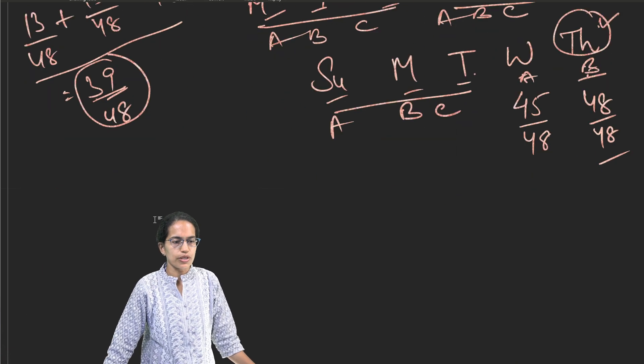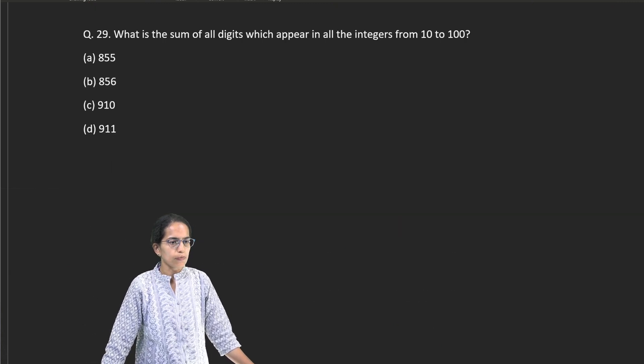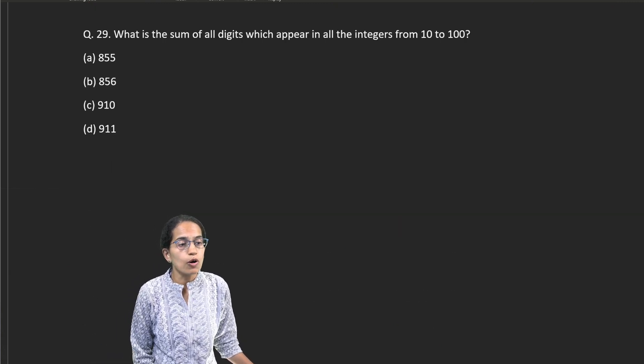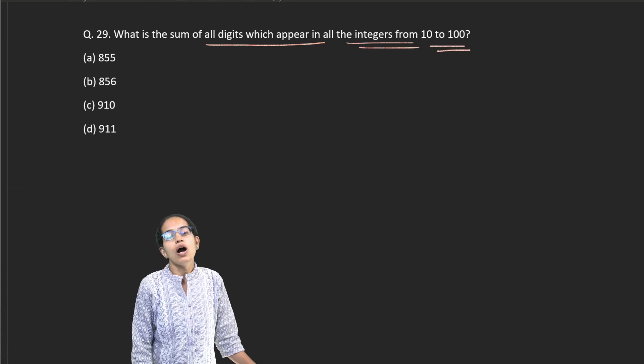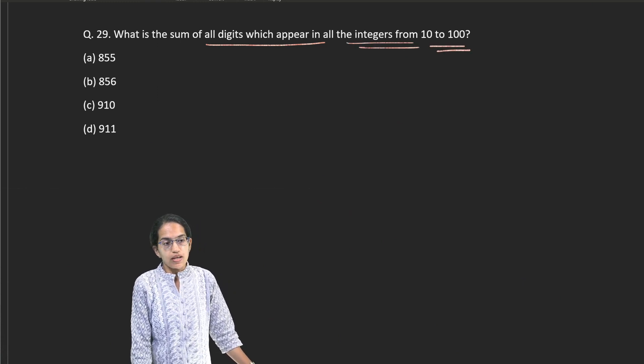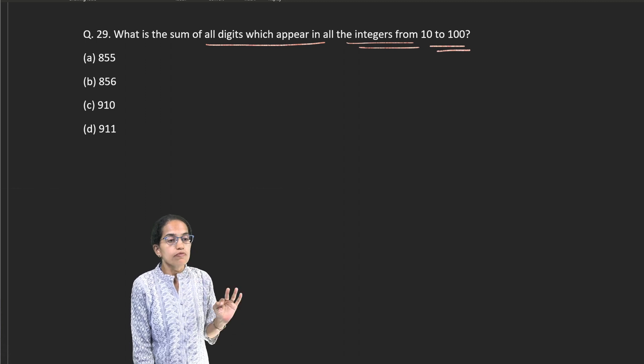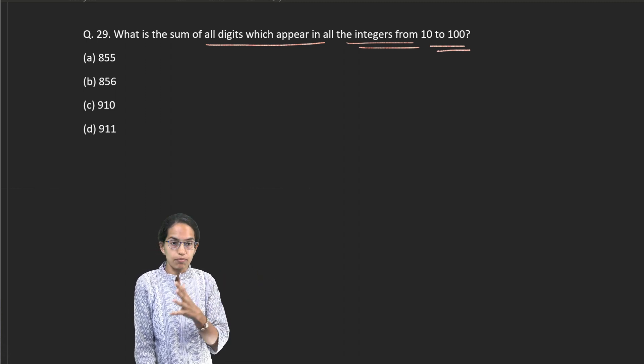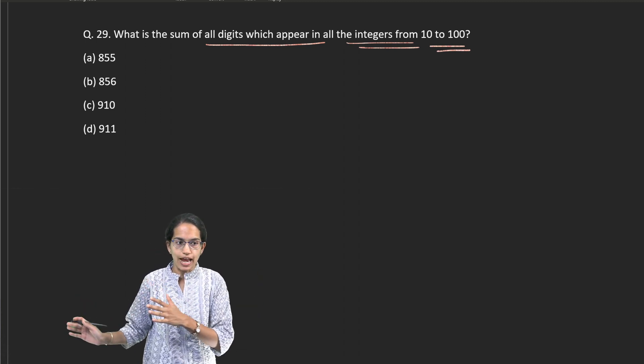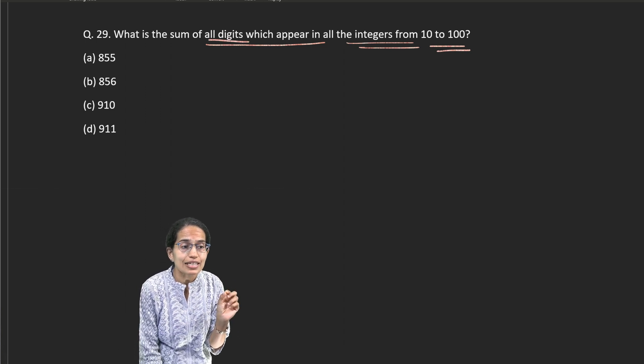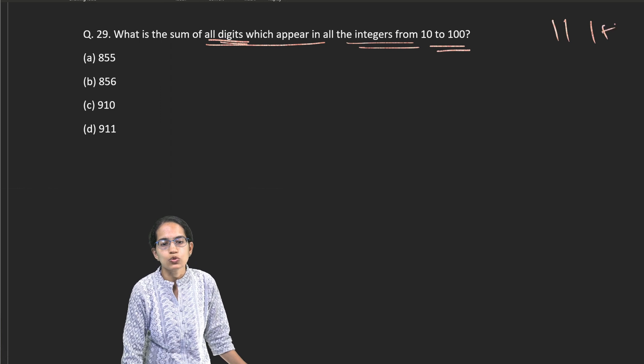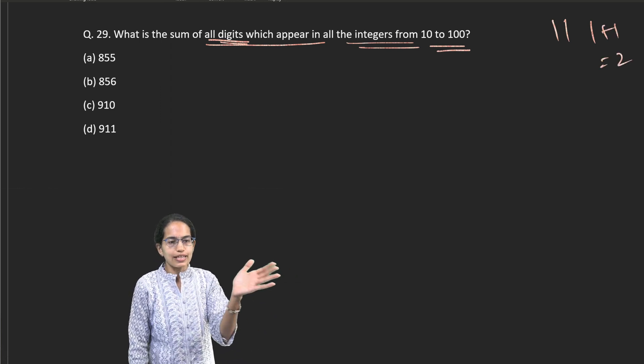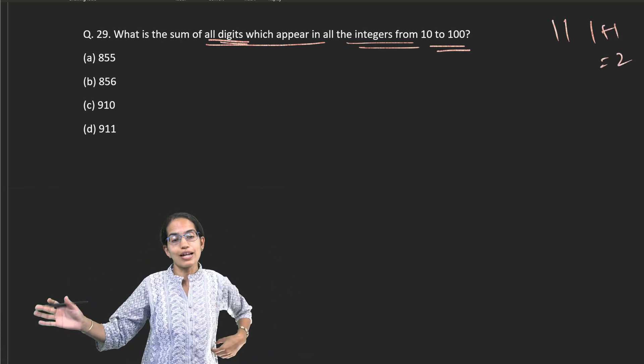So this was another important problem that you must be careful about. The next is, what is the sum of all digits which appear in all the integers 10 to 100? Now, what mistake we did was, we counted on to the numbers. That is 11, 12, 13 and we added those. Actually, it is asking sum of digits. That is, when it is 11, it is asking 1 plus 1. That's 2. And that's way from 10 to 100 all numbers.